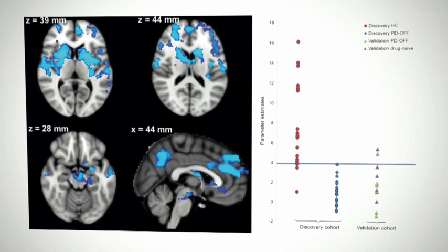Computational neuropsychiatry can help identify biomarkers and potentially help develop new treatments through drug discovery or deep brain stimulation. Already now there are examples of this.